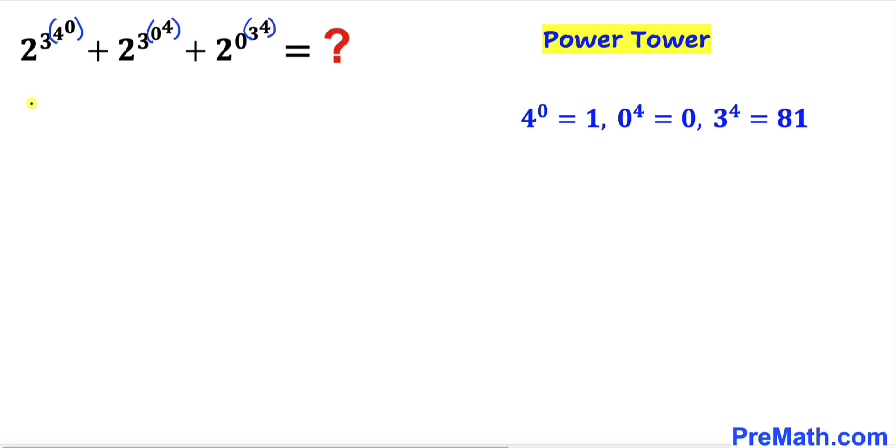Therefore, this expression could be written as 2^(3^(4^0)) which is 2^(3^1), plus 2^(3^(0^4)) which is 2^(3^0), plus 2^(0^(3^4)) which is 2^(0^81).